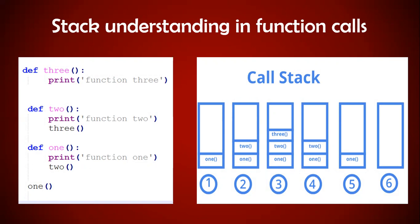Then it will look into function 2. In function 2, you don't have any more statements to execute, so function 2 will be taken out. Then function 1 — in function 1 also, you have exhausted every code and don't have anything to execute further, so function 1 will also be taken out. This is the way the stack works. In simple terms, the stack works like last in, first out.